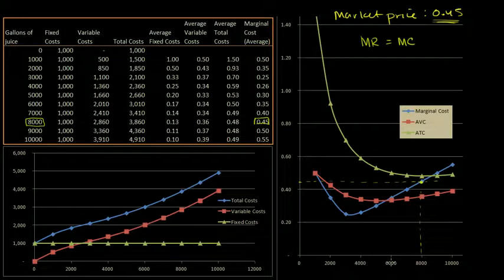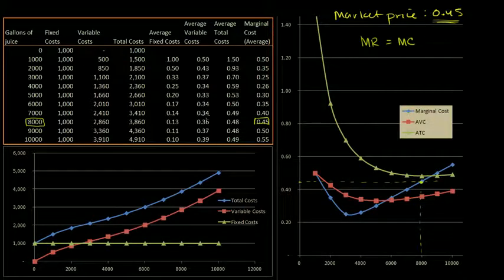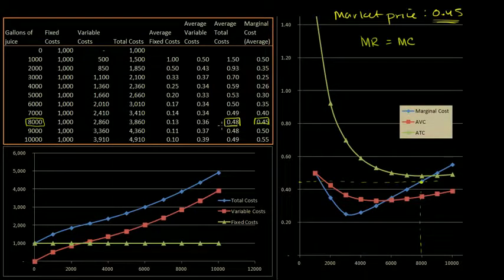Now, the reason why this is somewhat interesting is that at that point, the amount of revenue that we're getting per unit, our marginal revenue, is less than our total cost per unit. We're selling each unit at 45 cents, but our total cost for each of those units is 48 cents on average. So this right over here is our total cost.